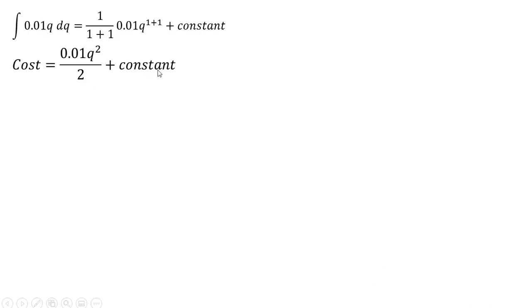So just rewriting that last step and simplifying here a little bit in the denominator, 1 plus 1 is 2, and in the exponent, 1 plus 1 is where the squared term is coming from. And the constant here is just going to represent fixed cost, which is $722. So we have the following, and we can simplify this 0.01 divided by 2 to get the following result.